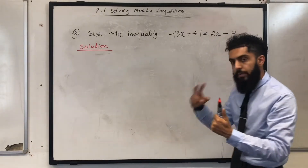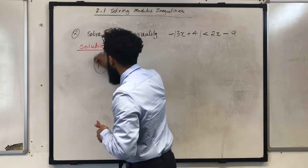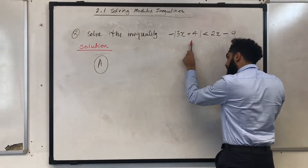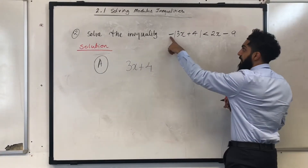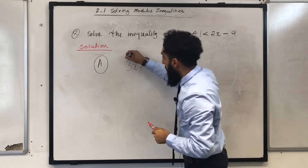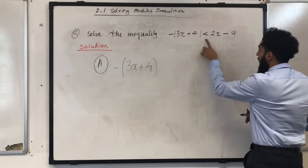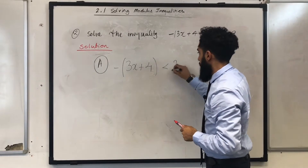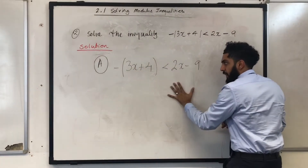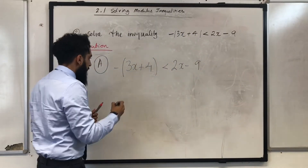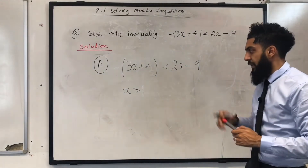First, you need to form two inequalities. The first inequality, inequality A, will be whatever is inside the modulus — 3x plus 4. Because there is a negative sign in front of the modulus, you put brackets around this and put a negative in front. That has to be less than 2x minus 9. Solving this, you get the solution x is greater than 1.